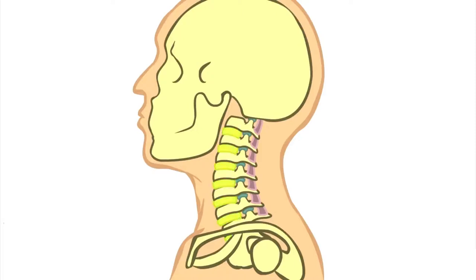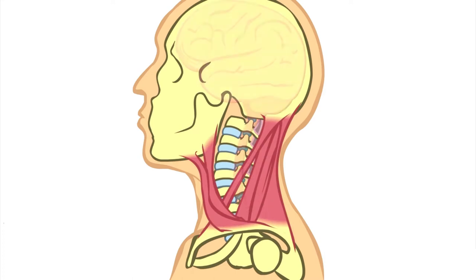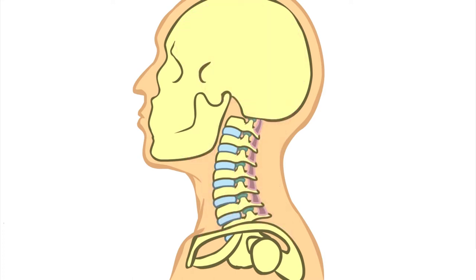In a normal neck profile, our discs, facet joints, ligaments, muscles, and our central nervous system are all happy, nourished, and working in harmony, with weight evenly distributed through all of the working components.